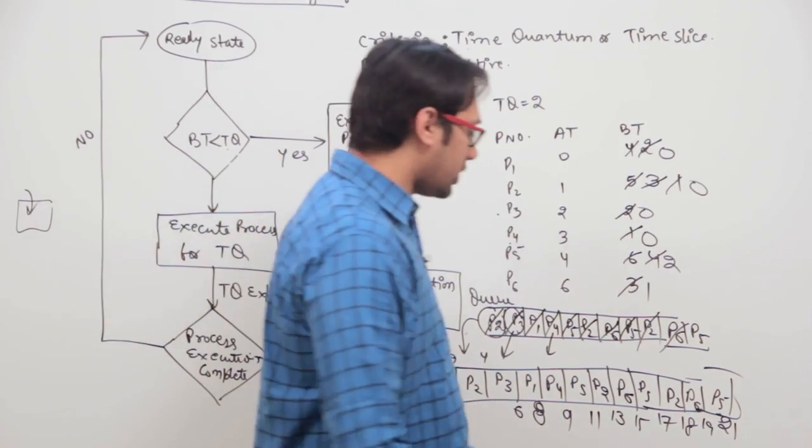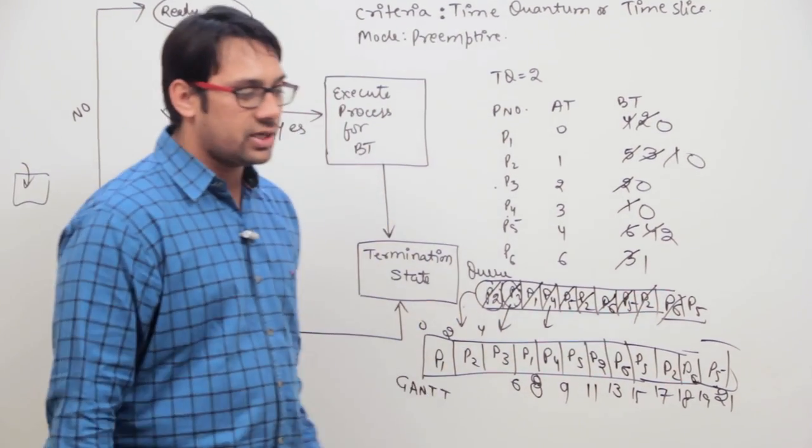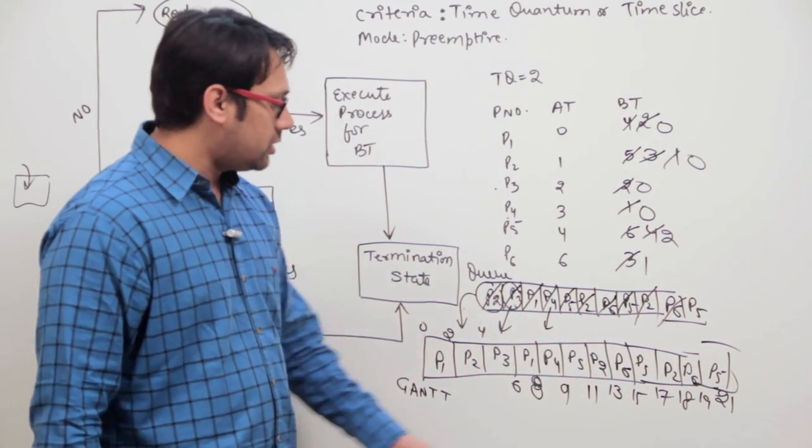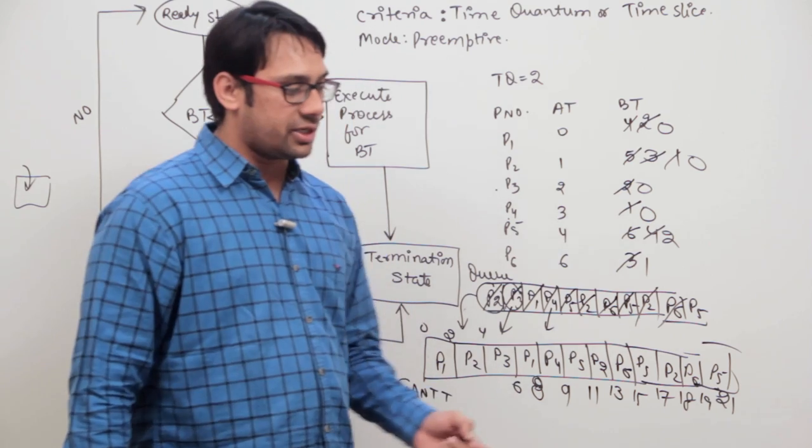So you can see the completion times: process P5 finished at time 21, process P6 finished at time 19, and process P2 finished at time 18.